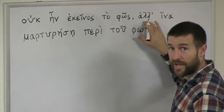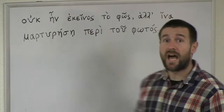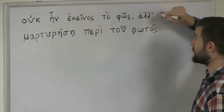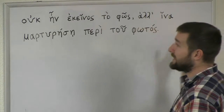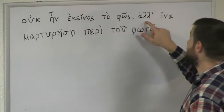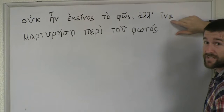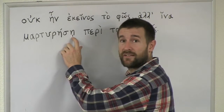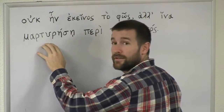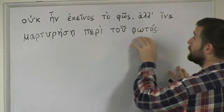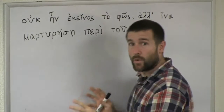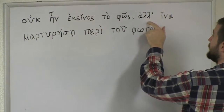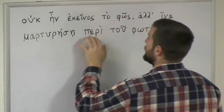'All'' means 'but' — notice it has an apostrophe right here because actually the full word is 'alla'. Alla means 'but', but because we've dropped the alpha and run it together with the next word, there's an apostrophe there showing that something's missing. So this gets run together as 'all' hina martyrēsē'. 'But, in order that' — we learned this word in the lesson on John 1:7. 'Martyrēsē' — we've got the telltale iota subscript telling us that this is a subjunctive verb — 'in order that he might bear witness'. 'Peri tou phōtos' — about the light. So literally, word by word, this is saying: 'That one was not the light, but in order that he might bear witness about the light.'